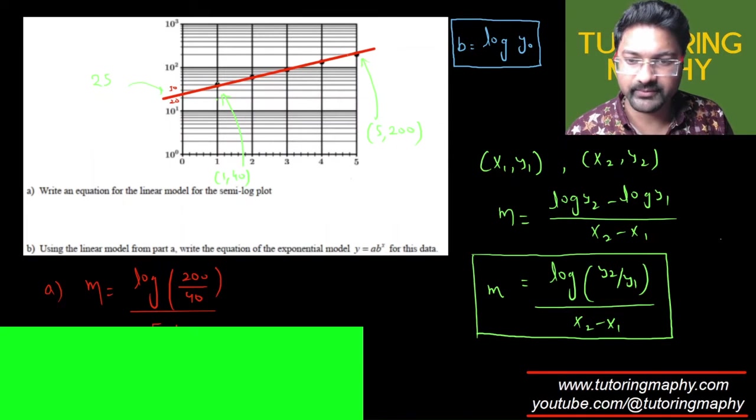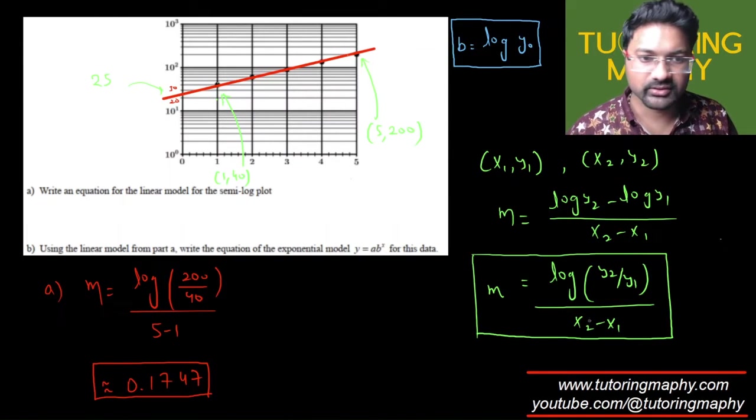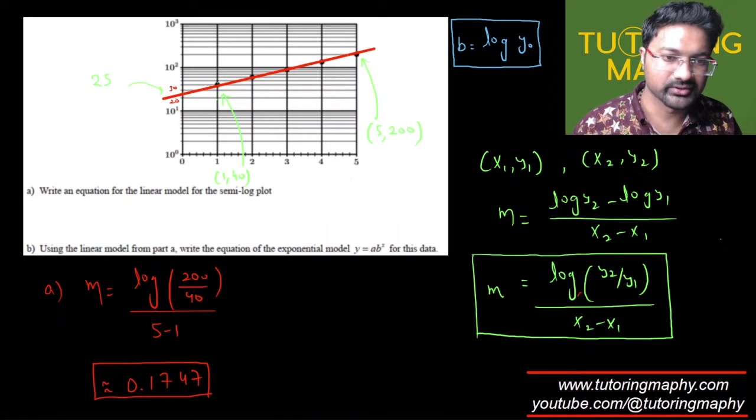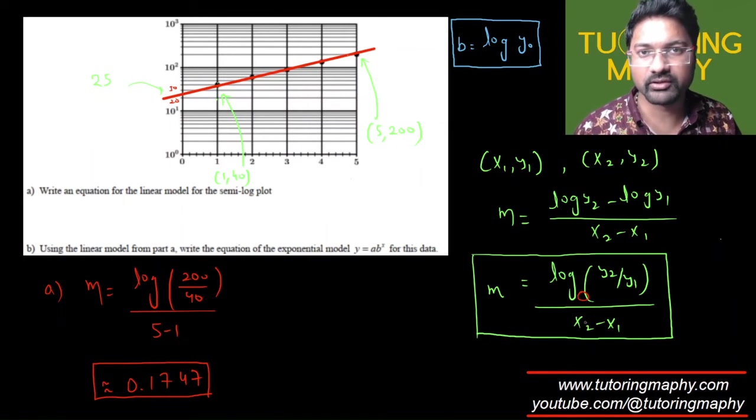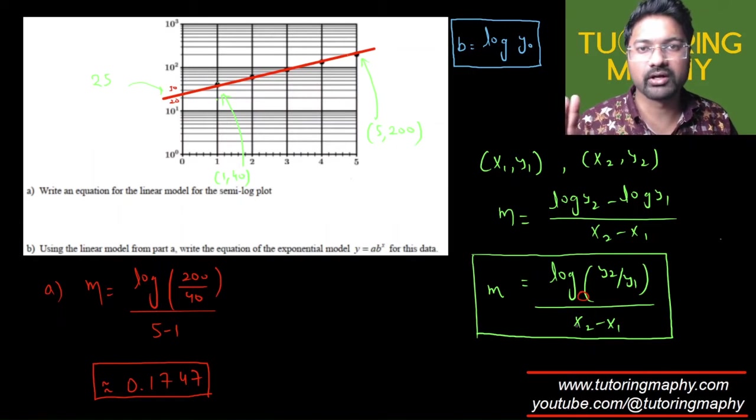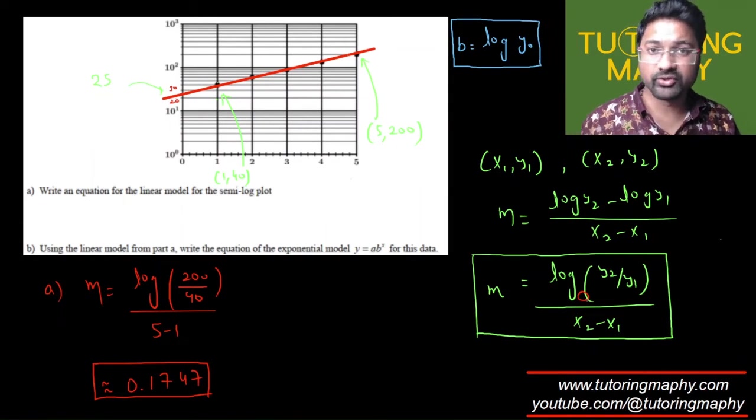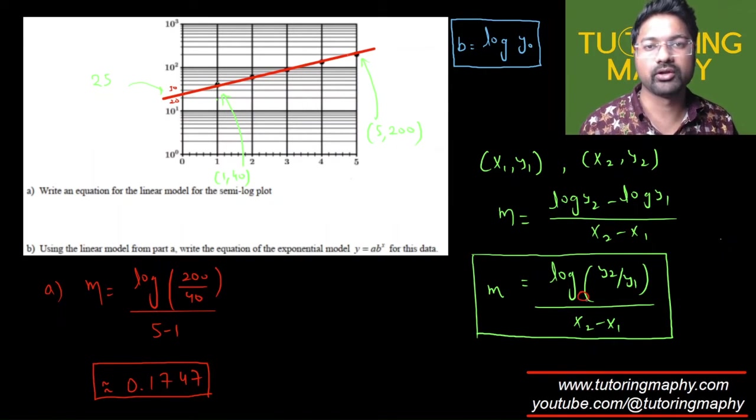You might be wondering that this is 0.1747. By the way, you might be wondering that I have not mentioned what is the base of this log. Yes, I have not, because that depends on how the semi-log axis is scaled, and that should be given in the question. Since it is not given in the question, at least in this question, I'm just taking a default log with base 10.